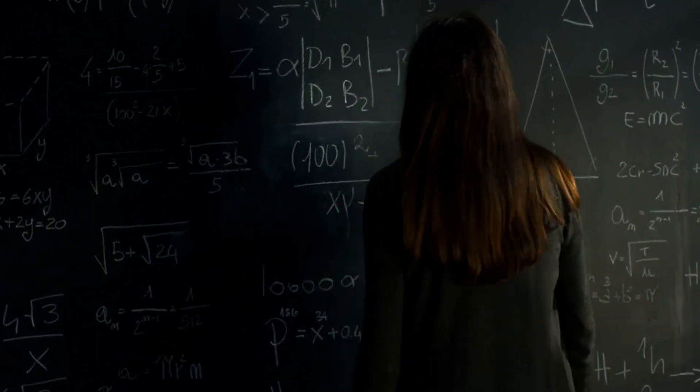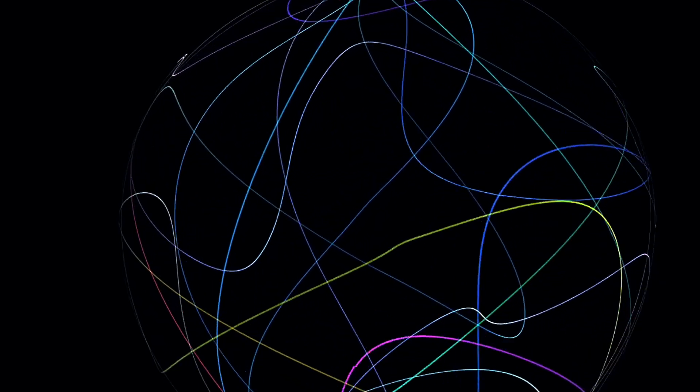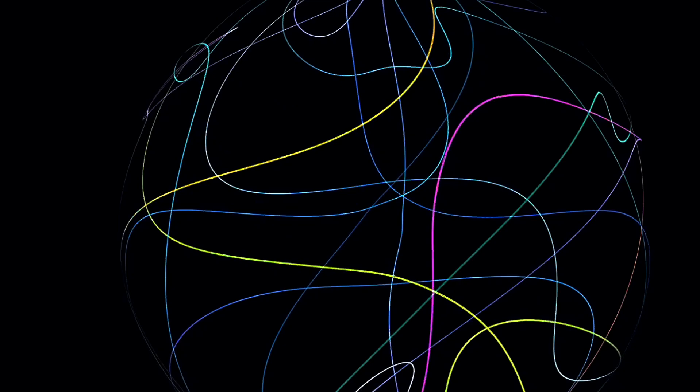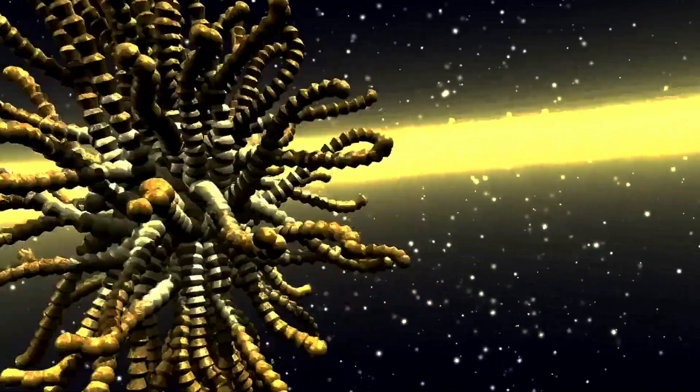The Riemann zeta function, denoted as zeta(s), is a function whose arguments may be any complex number other than 1 and whose values are also complex. Its analytical continuation has zeros at the negative even integers. That is, zeta(s) equals 0 when s is one of -2, -4, and so on. These are known as its trivial zeros.